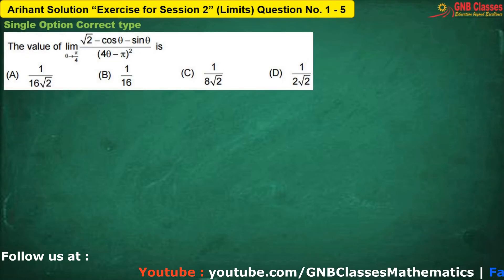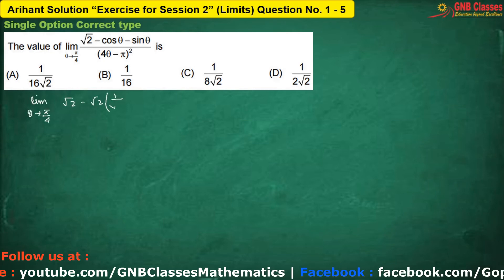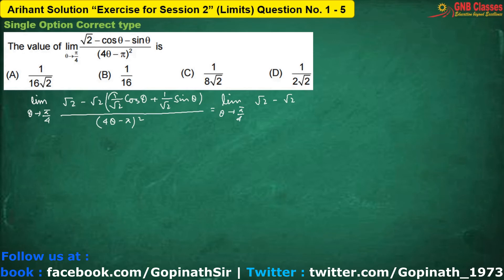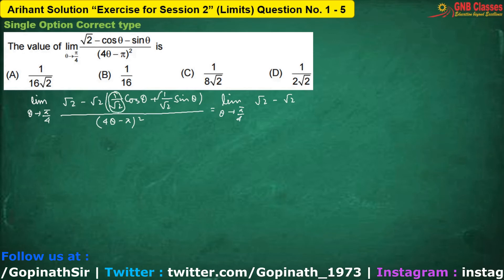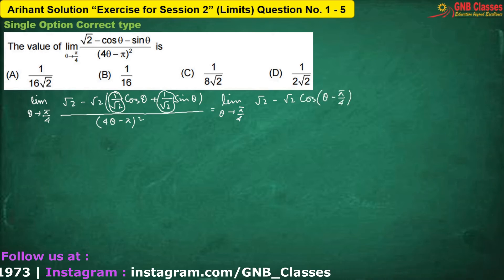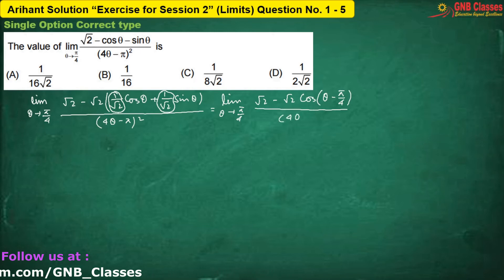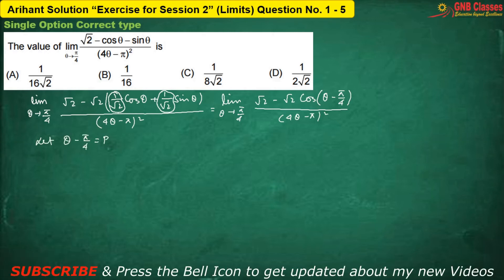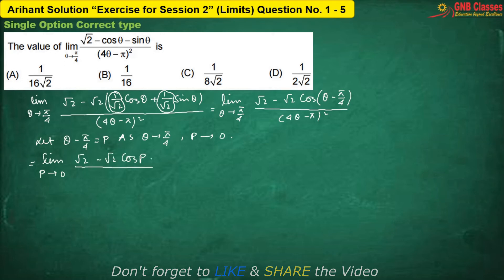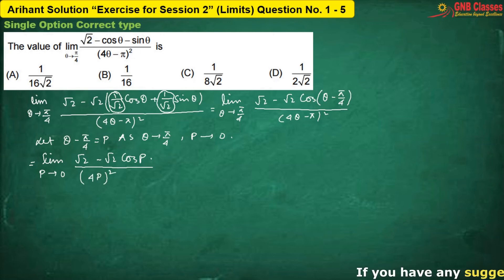In this problem, let us manipulate the numerator. Here, this 1 by root 2 can be replaced by cos(π/4), and this 1 by root 2 will be replaced by sine(π/4). So we are going to get cos(θ - π/4). And in the denominator, we are having the same thing — 4θ minus π whole square. Now, let θ minus π/4 be p. As θ tends to π/4, p is tending towards 0. Therefore, the limits become. And 4θ minus π will become.